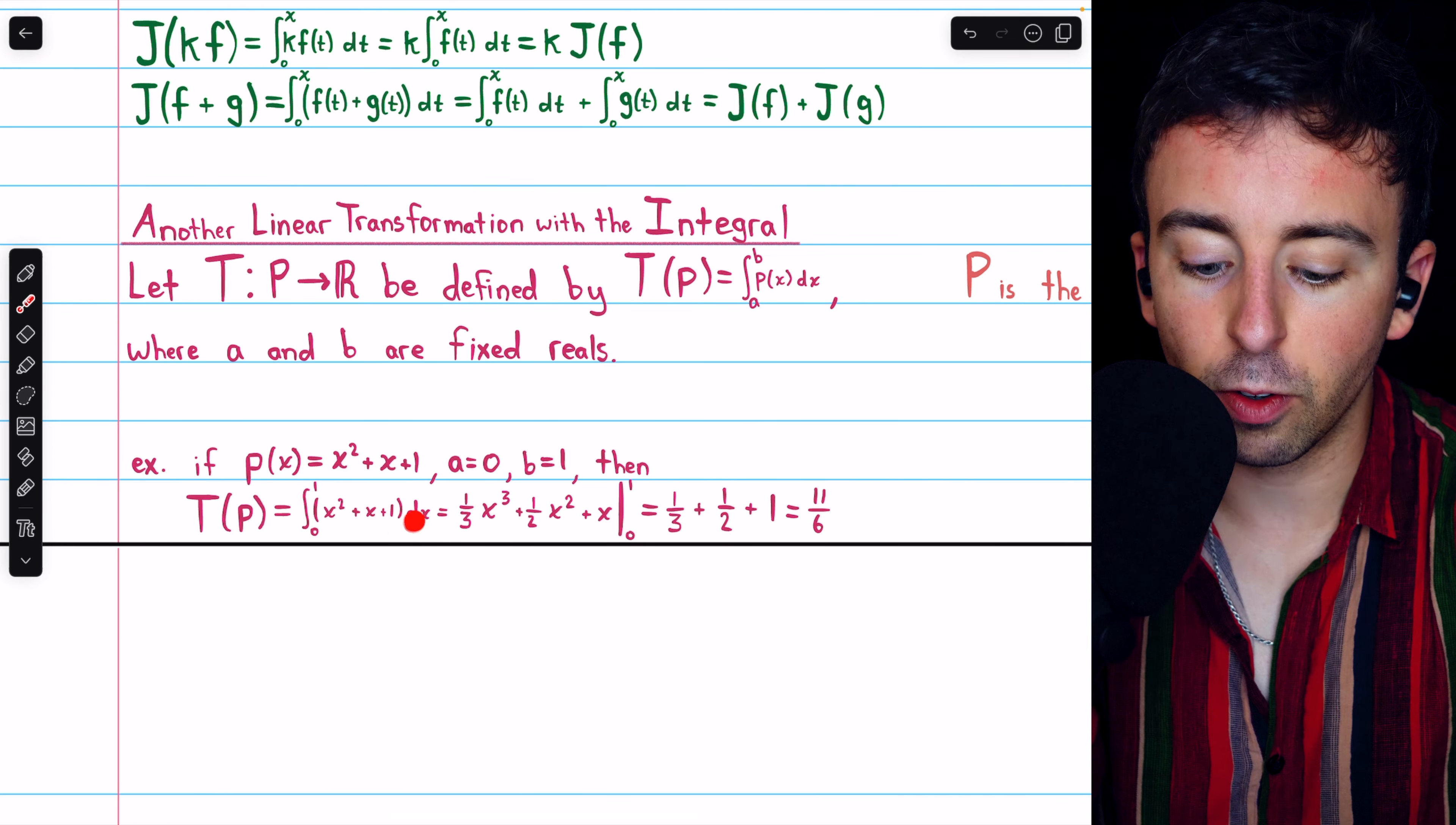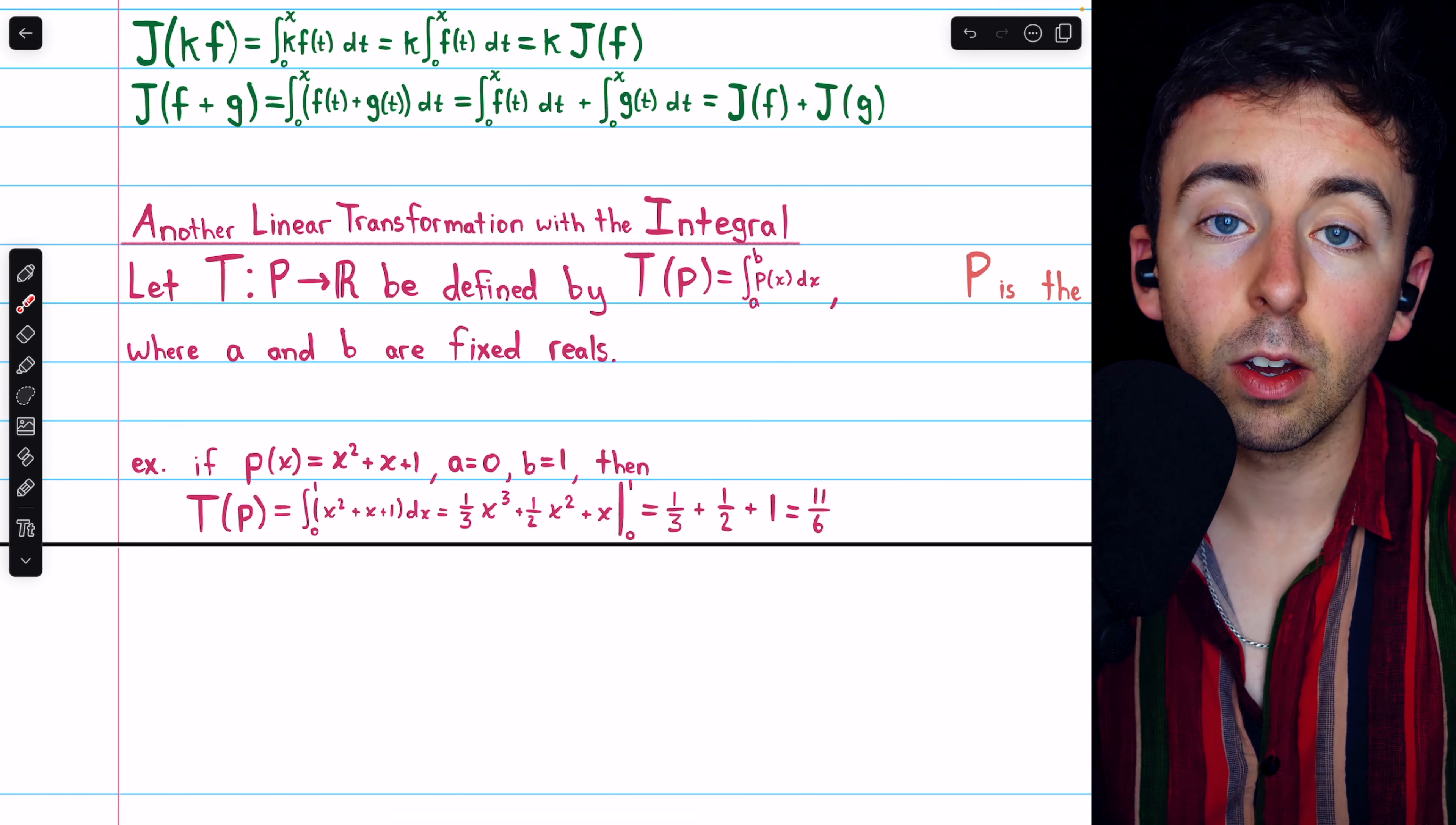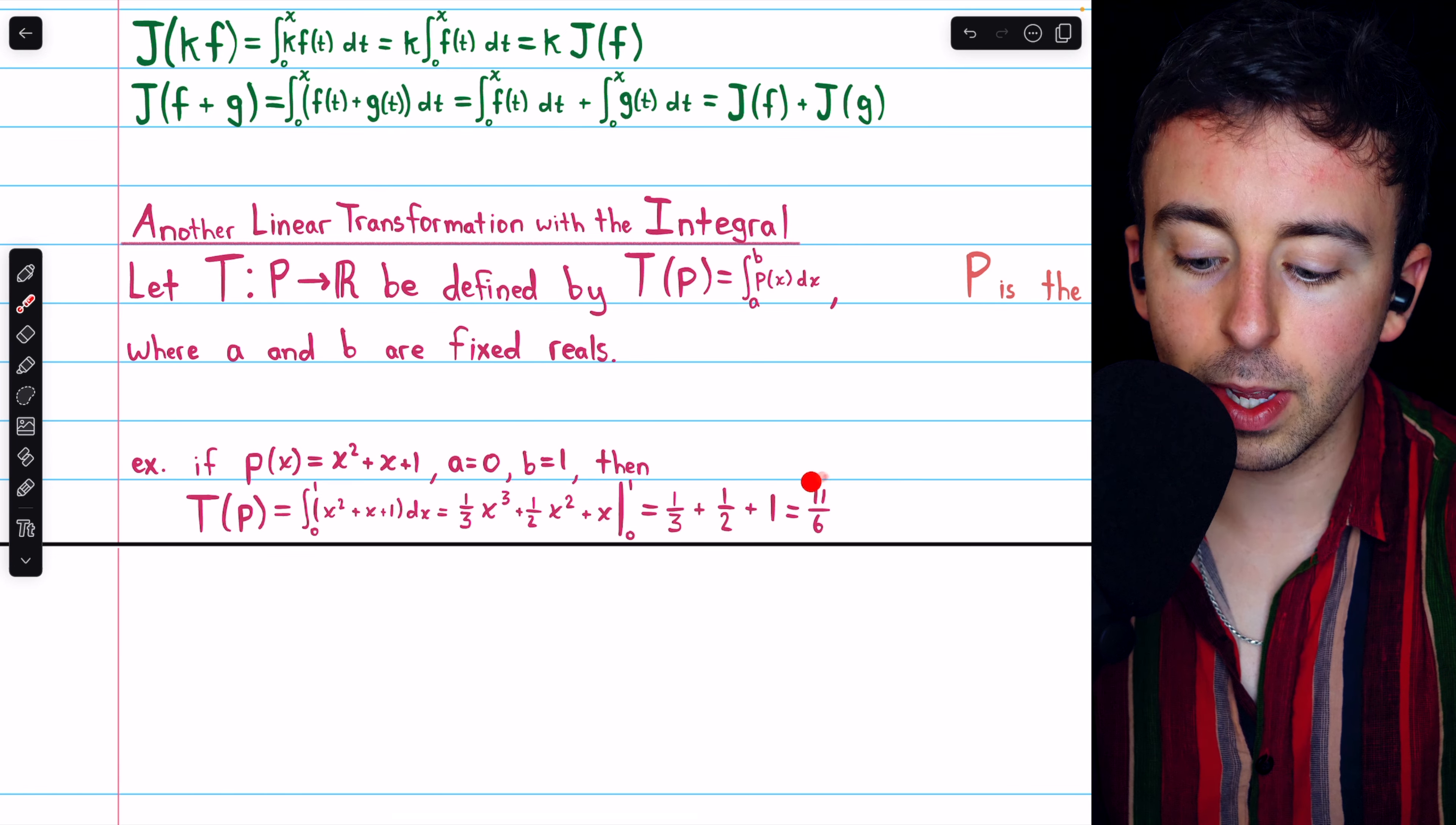Performing that integration to calculate the image of p, we find that it is 11 over 6. So this transformation maps the polynomial to 11 over 6.